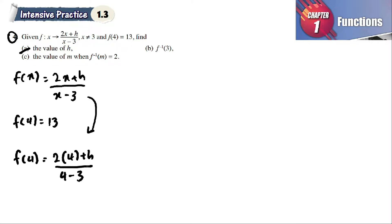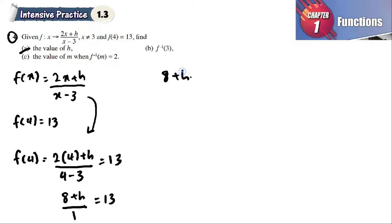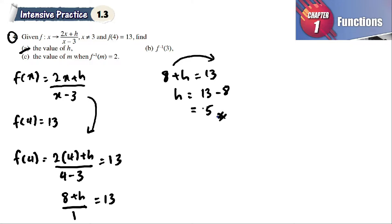So we have (2×4 + h) / (4 - 3) = 13, which gives (8 + h) / 1 = 13. Therefore 8 + h = 13, and h = 13 - 8 = 5. The value of h is equal to 5.